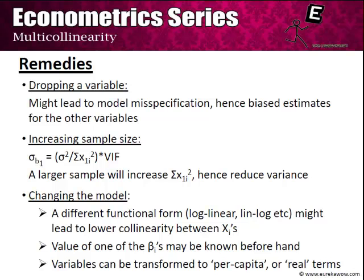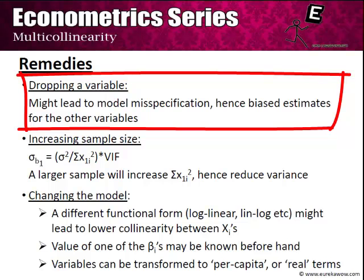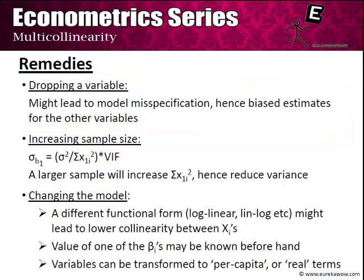Turning to remedies for multicollinearity: the first is dropping a variable. However, this risks model misspecification and biased estimates for remaining variables. As discussed in the module on model specification, underfitting — dropping a relevant variable — is worse than including an extra variable that causes multicollinearity. Dropping a variable with a low t-value may therefore commit the error of underfitting the model.